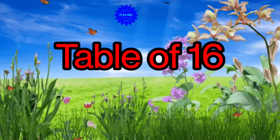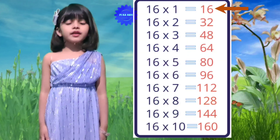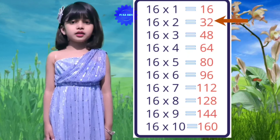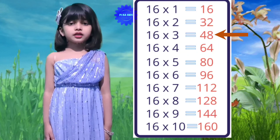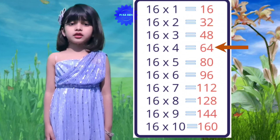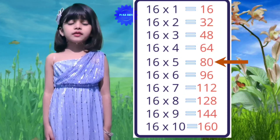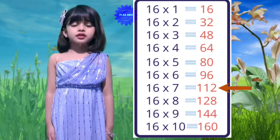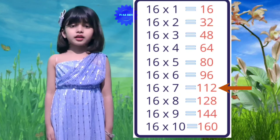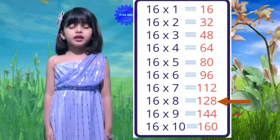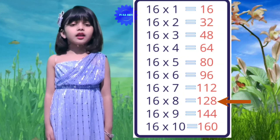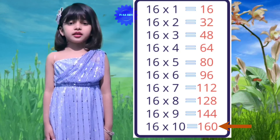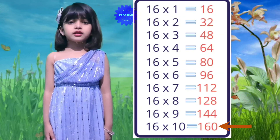Table of 16: 16 ones are 16, 16 twos are 32, 16 threes are 48, 16 fours are 64, 16 fives are 80, 16 sixes are 96, 16 sevens are 112, 16 eights are 128, 16 nines are 144, 16 tens are 160.